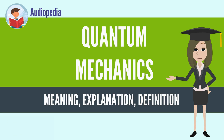There are limits to the precision with which quantities can be measured — the uncertainty principle. Quantum mechanics gradually arose from theories to explain observations which could not be reconciled with classical physics, such as Max Planck's solution in 1900 to the black body radiation problem, and from Albert Einstein's 1905 paper which explained the photoelectric effect. Early quantum theory was profoundly reconceived in the mid-1920s by Erwin Schrödinger, Werner Heisenberg, Max Born and others.